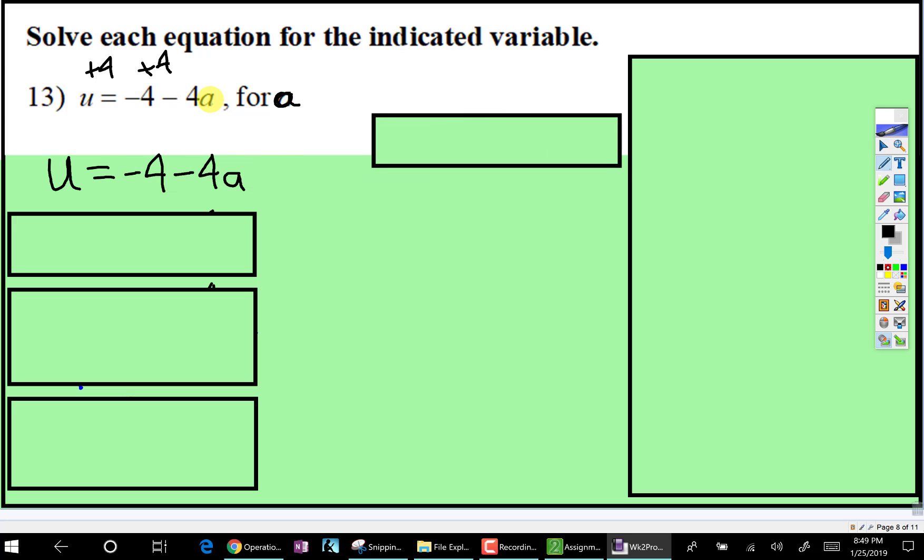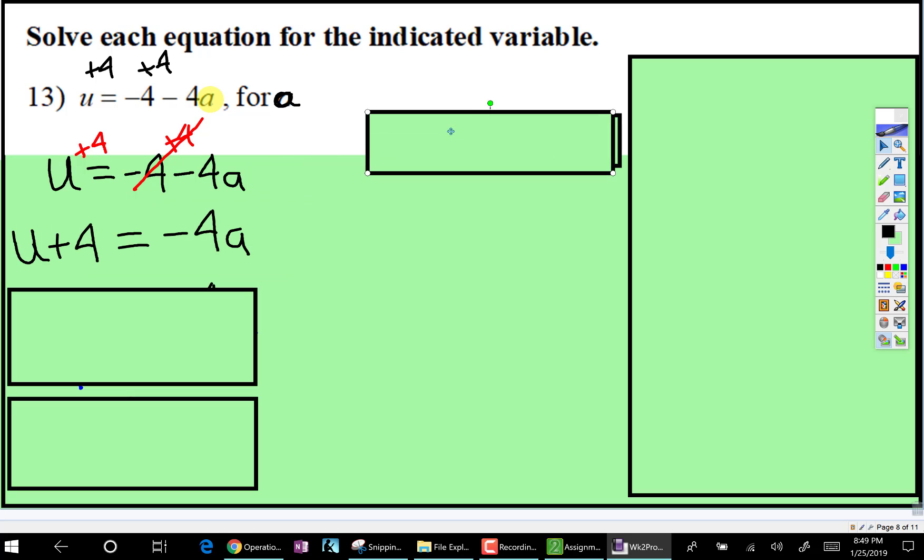Here, I'll do it in a different color. So we're going to add 4 here, and that cancels that. And then we'll add 4 right there, and when we simplify, it looks just like this.